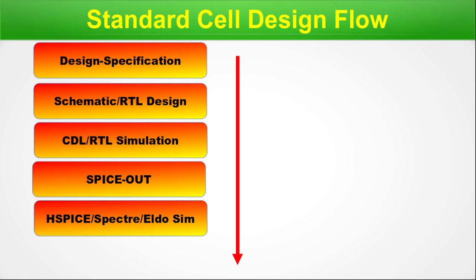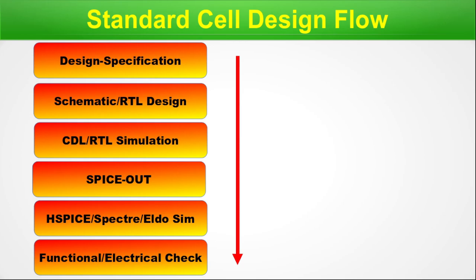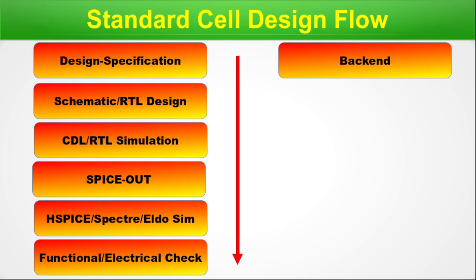Next we do the SPICE vector or ELDO simulation of the SPICE netlist — whatever format we have produced in the SPICE out step. Finally, using all these steps we do the functional and electrical check of the design. One cell can have an HDL description and at the same time a SPICE description, and both are taken care of by this flow. After this step our backend starts.